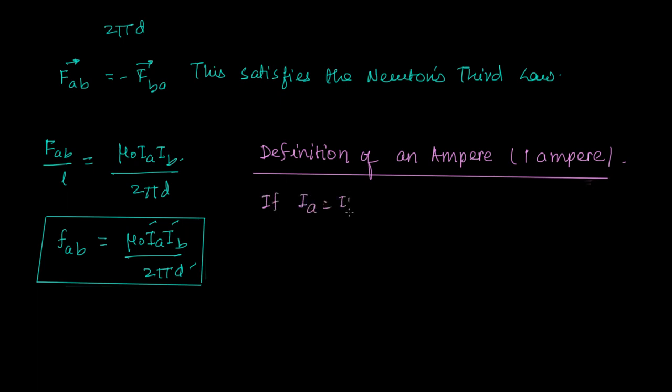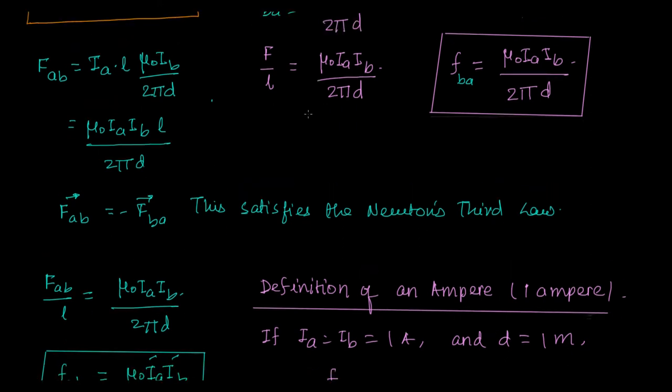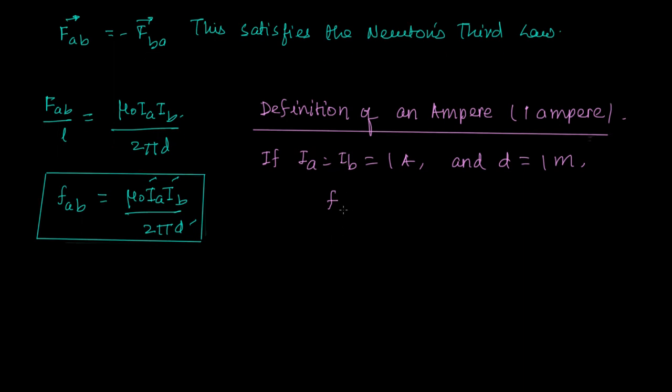If IA is equal to IB is equal to 1 amperes and D is equal to 1 meters, then what is FAB or FBA? See, both of them are the same again. Why? Because FBA and FAB was the same. I have just divided them by L. So the magnitude of both of them is the same. So F is equal to, I am not distinguishing it by writing ABA or BA. So F becomes equal to mu0 into 1 into 1 upon 2 pi into 1. And this becomes equal to mu0 upon 2 pi. And what is mu0 equal to? It is 4 pi into 10 to the power minus 7 upon 2 pi.